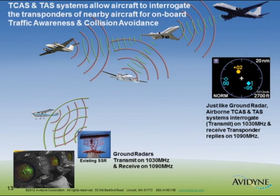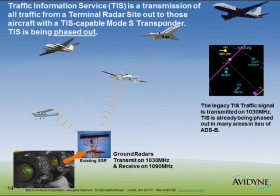Airborne TCAS and TAS systems — traffic advisory systems and traffic collision avoidance systems used by a lot of general aviation and certainly air transport category aircraft — are essentially airborne ground stations. They transmit on 1030 MHz and listen for replies from transponders of nearby aircraft, just like a ground station. The TIS transponders popular in the late 90s and early 2000s used ground-based radar sites to encode traffic information on the 1030 transmission from secondary surveillance radar, giving you a traffic display. Those systems are being phased out. The TIS-B we'll talk about is transmitted on 1090, so those old TIS transponders won't provide the same function without a software upgrade.